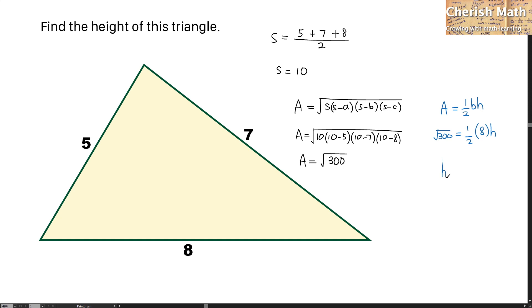And the height that I am going to get here is simply by using the square root of 300 divided by 4. So the value that I am going to get here is in fact 4.33 units.